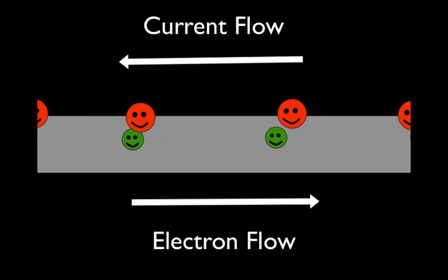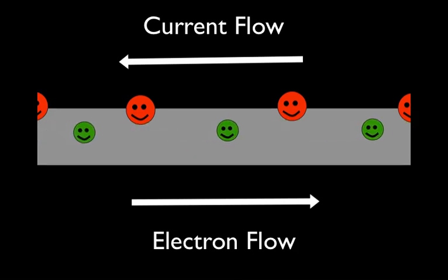So we say that conventional current, or current, what people just call current in general usage, is actually moving in the opposite direction to the flow of the electrons. So the current in this wire is actually moving to the left.